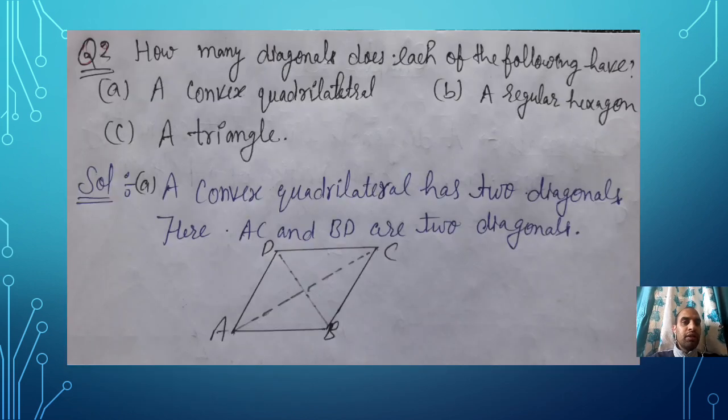In this way you can write this one. Now let's take your question number 2 of the exercise: How many diagonals does each of the following have? First is convex quadrilateral. Convex means all the angles inside a figure are less than 180. You can see here I have joined A and C, and B and D. So a convex quadrilateral has two diagonals. Here you can see AC and BD are two diagonals.